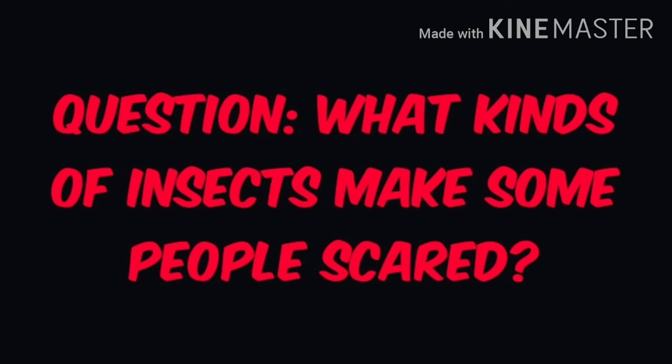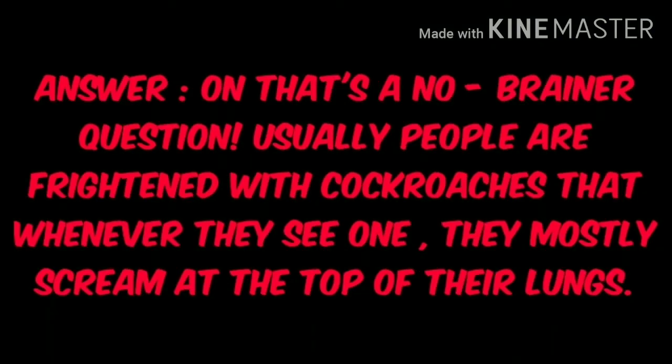The third question is: what kinds of insects make some people scared? The answer is: that's a no-brainer question — usually people are frightened of cockroaches; whenever they see one they mostly scream at the top of their lungs. Here 'that's a no-brainer question' means it's a very simple question, and 'at the top of their lungs' means very loudly. In this way you can give the answer to this question.